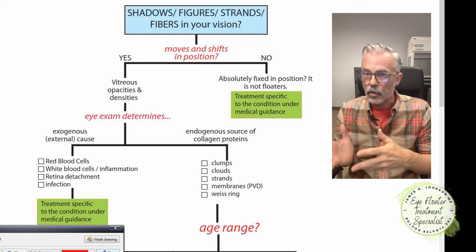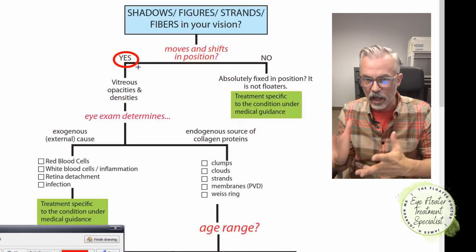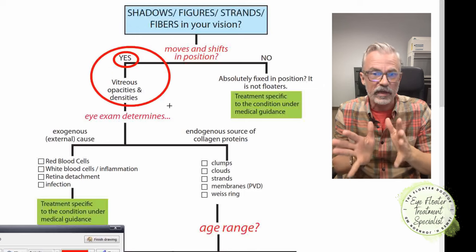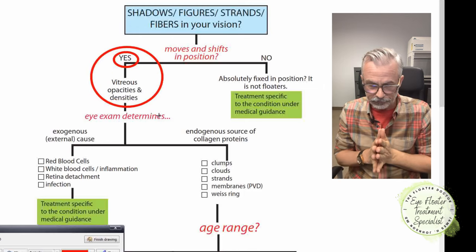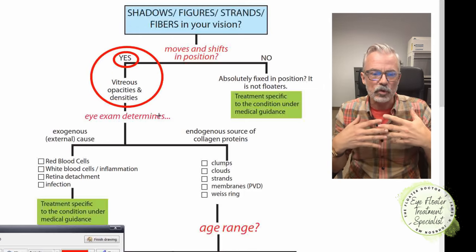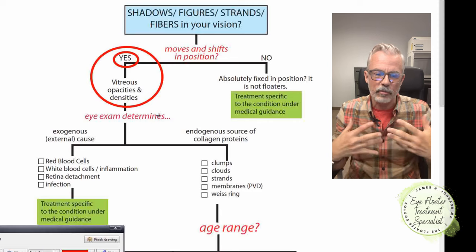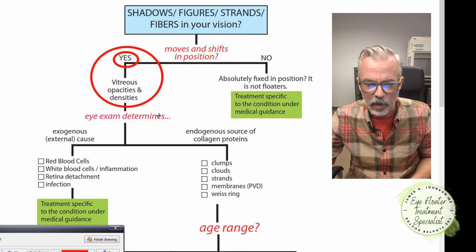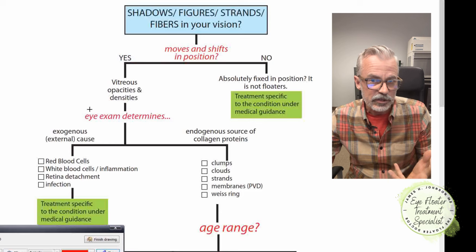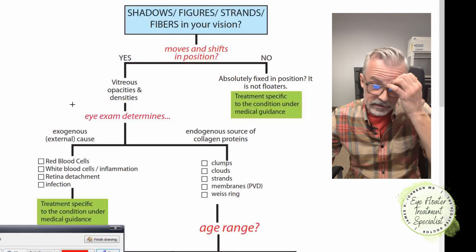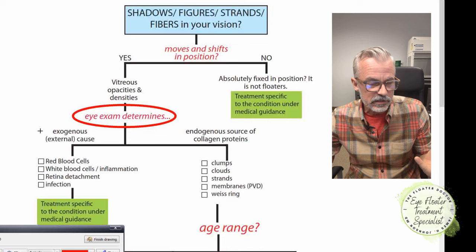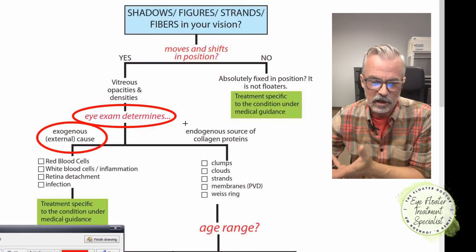If the answer is yes — it tumbles, it moves, it shifts — then we're talking about something in the vitreous. It is some sort of vitreous opacity and density. The eye examination — which can be done locally, not necessarily by me — will determine whether it's an exogenous or endogenous cause. Exogenous means something from outside the vitreous getting into the vitreous.